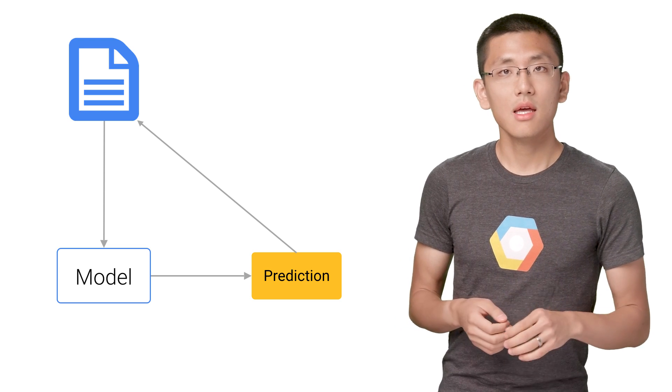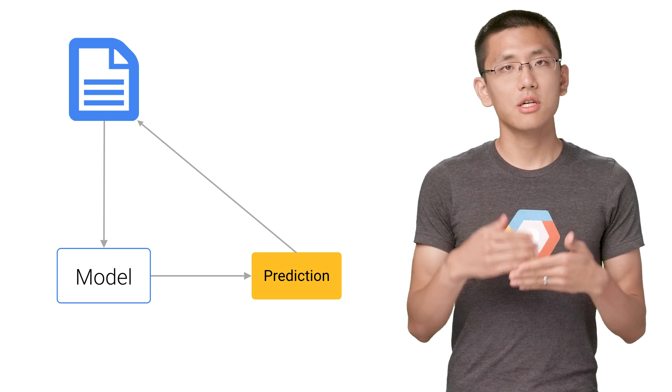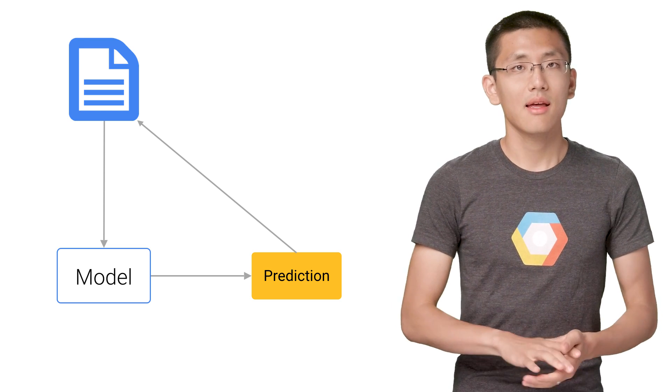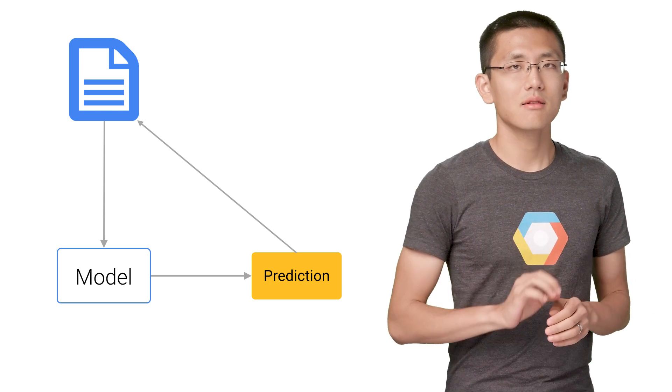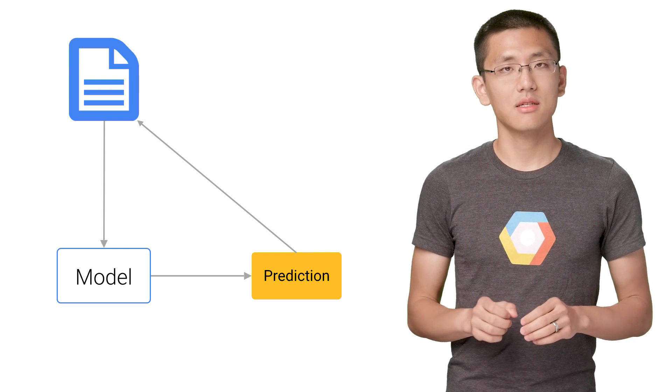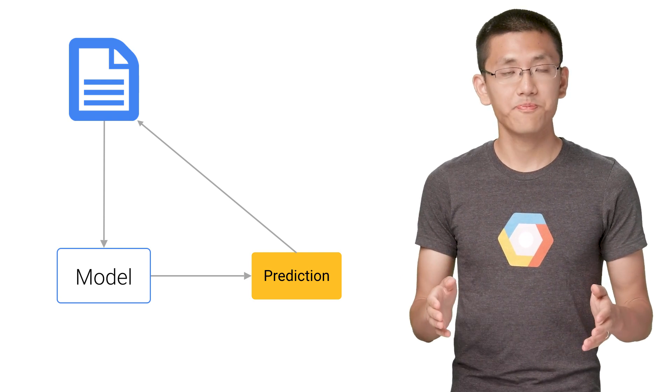Additionally, if we want our prediction server to scale with demand, that adds another layer of complexity to the problem. It turns out that TensorFlow already has a built-in function that can take care of generating an optimized model for serving predictions. It handles all the adjustments needed, which saves you a lot of work.